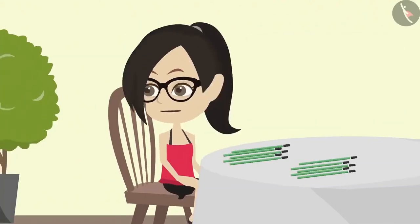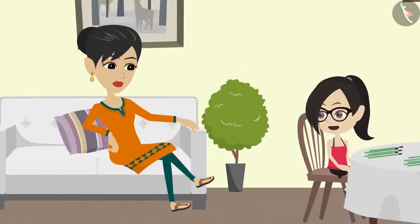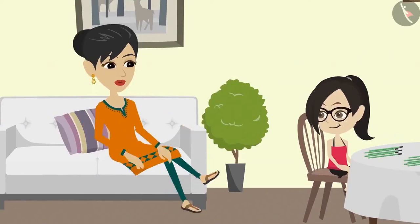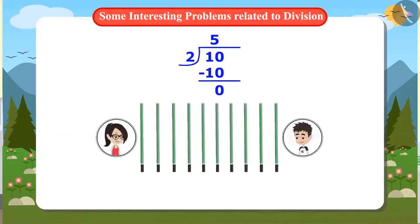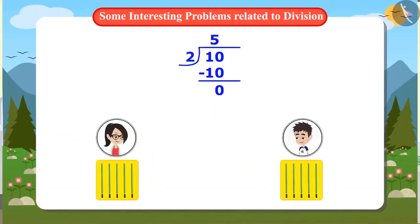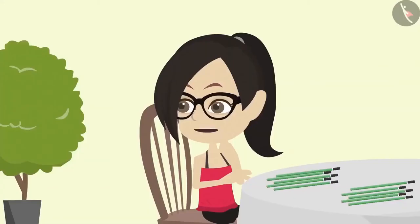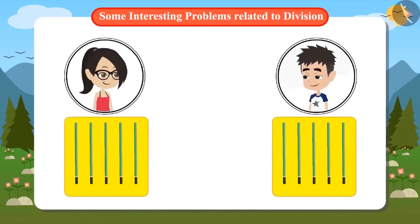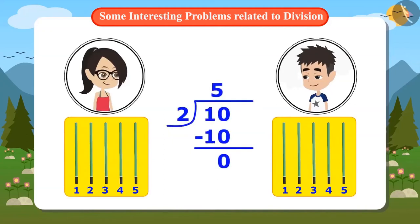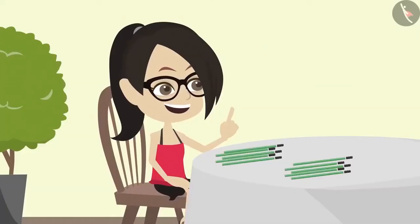Mummy, the answer was five when I divided ten by two. Vandana, when ten is divided by two and the answer is five, it means that dividing ten pencils into two parts will bring five pencils in each part. Now I understand. Even when I equally distributed the pencil one by one, there were five pencils on my brother's side and my side. But I did not need to do that. I can know immediately by dividing that both will have five pencils.